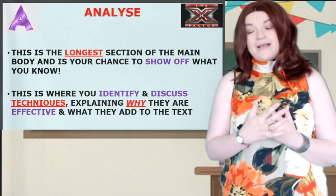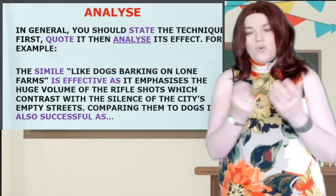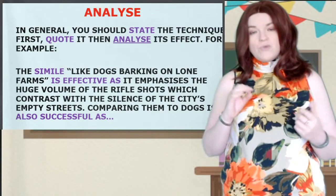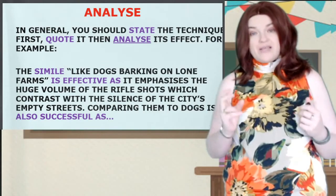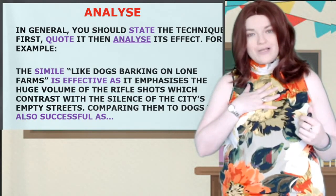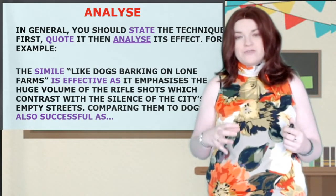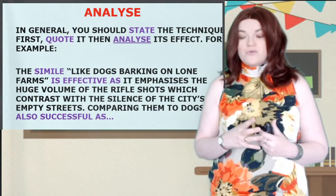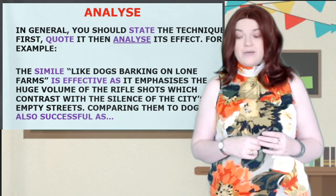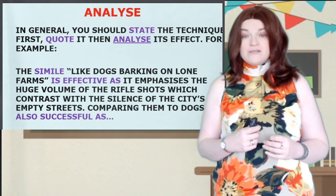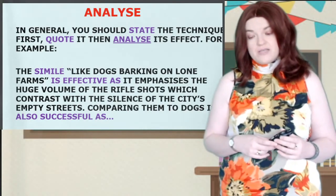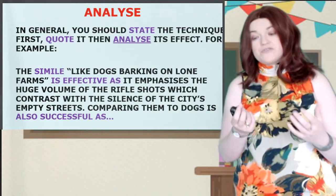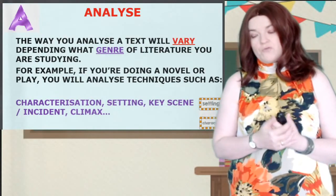In the analysis, identify and discuss techniques, say why they're effective, what do they add to the text, what do we gain from them. In general, tell me the technique first, then quote it, then analyse it. For example: 'The simile — like dogs barking on lawn farms — is effective as it emphasises the huge volume of the rifle shots, which contrasts with the silence of the city's empty streets. Comparing them to dogs is also successful as...' and then you go on and talk about the connotations of a dog and what that might suggest about war or guns.